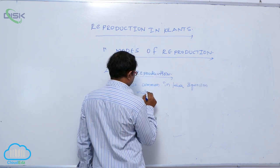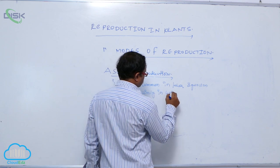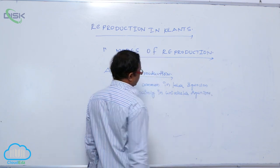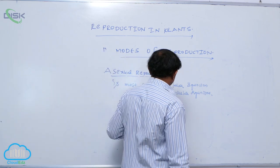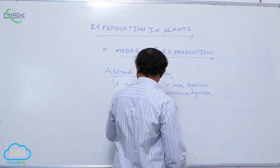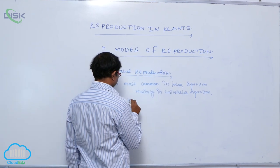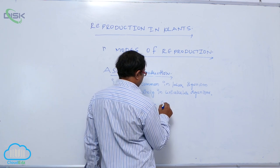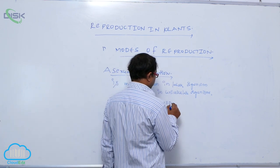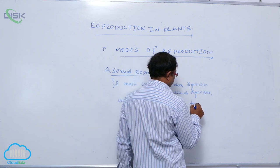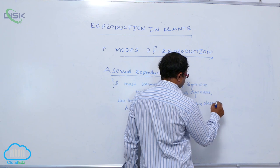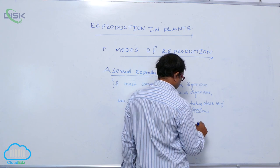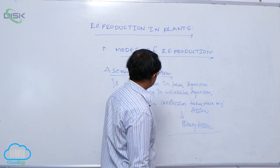Asexual reproduction is mainly found in unicellular organisms. In bacteria or amoeba — these are unicellular organisms. Cell division takes place by fission — that is known as binary fission. So in binary fission, the cell divides to produce new organisms.